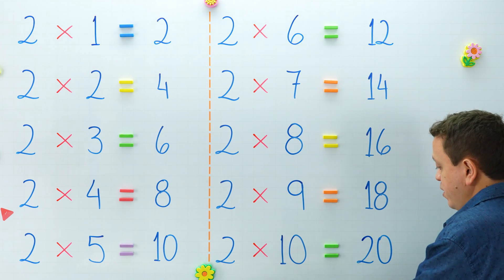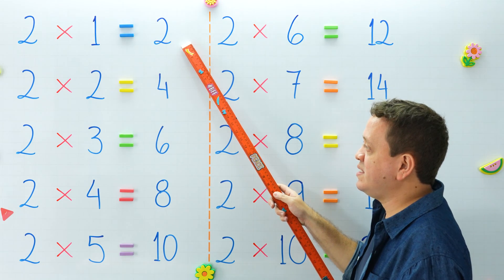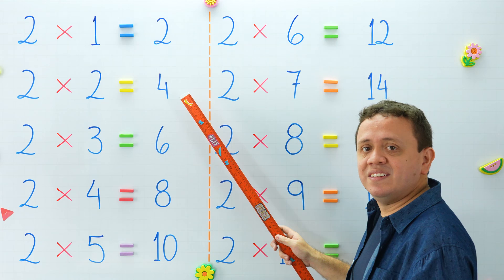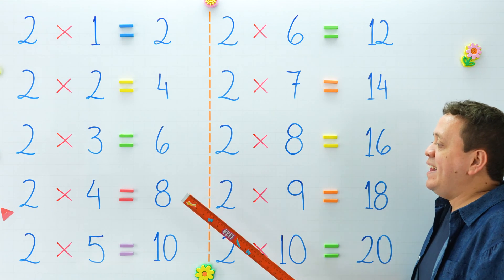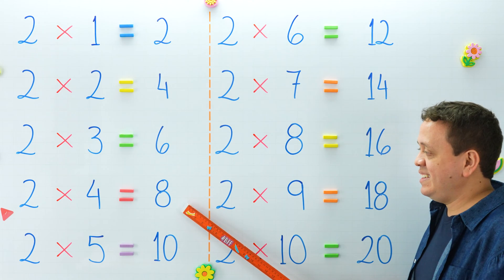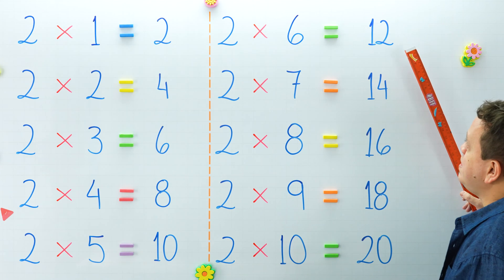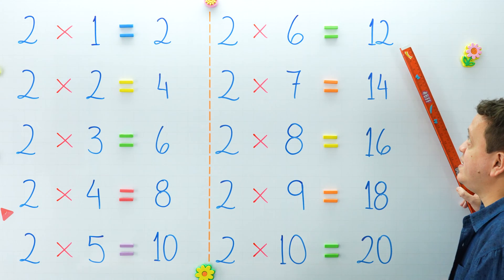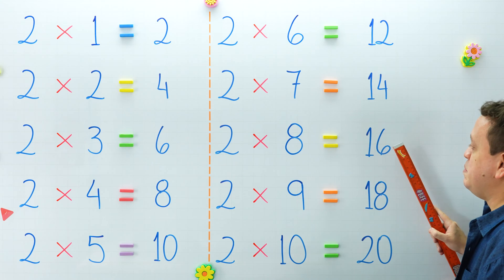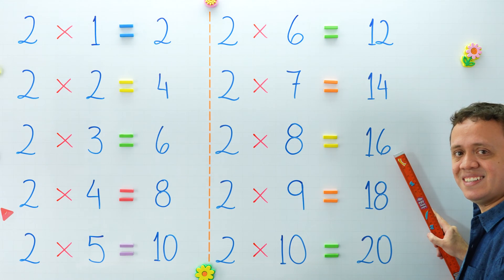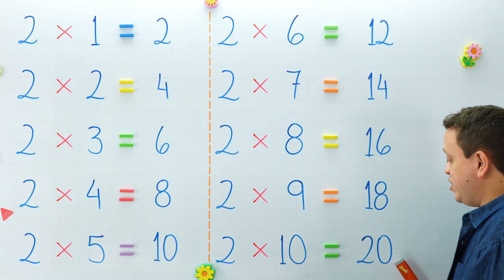Why don't we take another look at the products of this table? But this time you're going to help me. What is 2 times 1? And 2 times 2 equals? 2 times 3 equals? And 2 times 4 equals? 2 times 5 is equal to? In the next column: 2 times 6 equals? And 2 times 7 equals? 2 times 8 is equal to? And 2 times 9 equals? 2 times 10 is equal to?